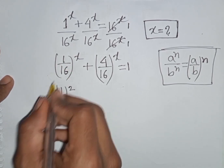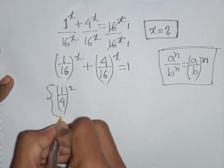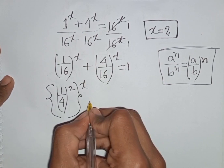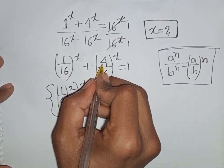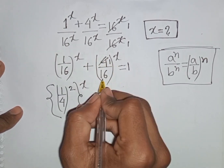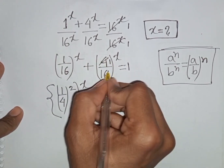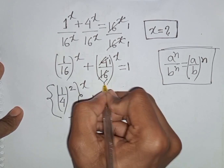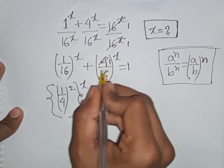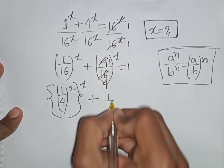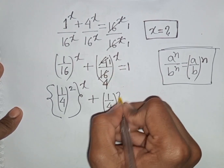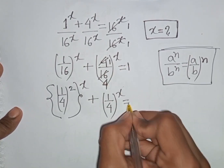So the first bracket can be written as the second bracket. We see 4 divided by 4 equals 1, and 16 divided by 4 equals 4. So we have (1/4)^x raised to a further power, equal to 1.